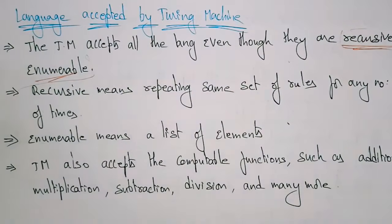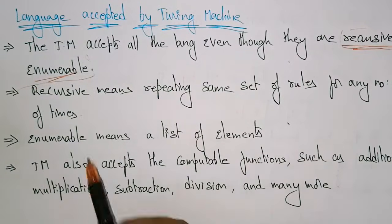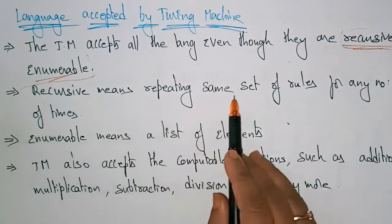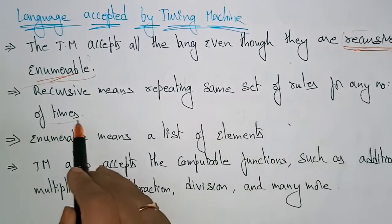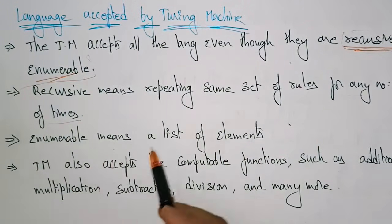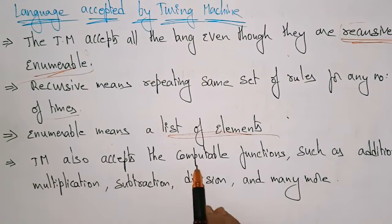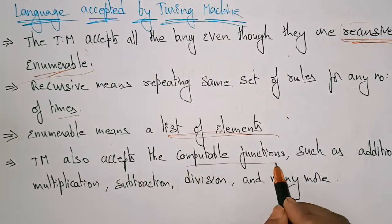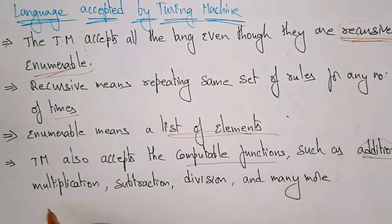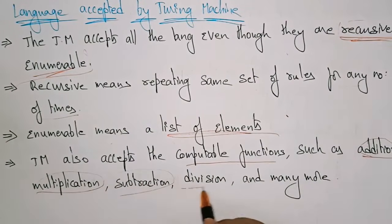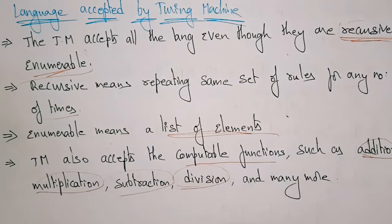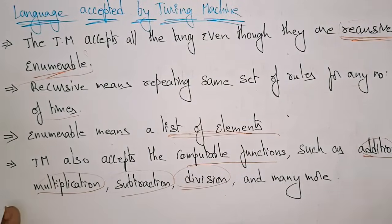Recursively enumerable means: recursive refers to repeating the same set of rules any number of times, whereas enumerable means a list of elements. The Turing machine also accepts computable functions such as additions, multiplications, subtractions, divisions, and many more.